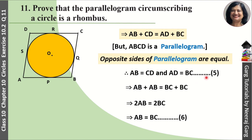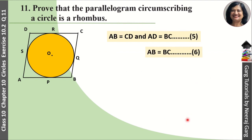One equation here and another equation here. AB equals CD and AD equals BC. And AB equals BC. So by all these results, these four sides are equal.